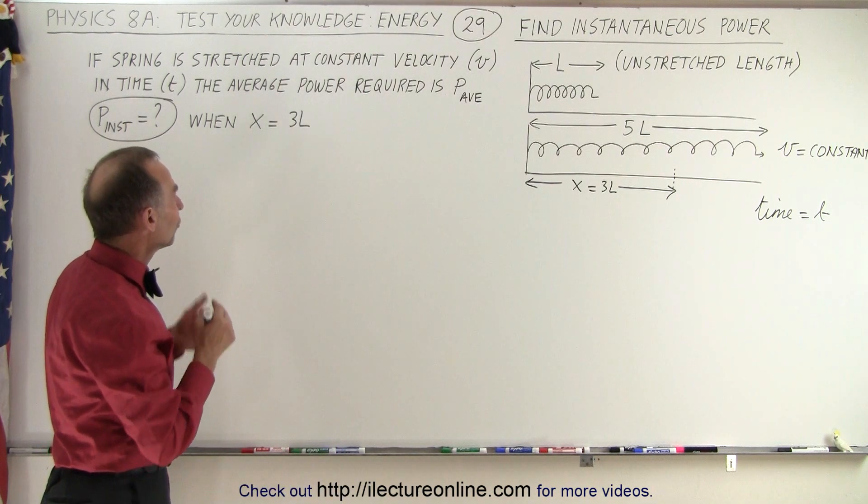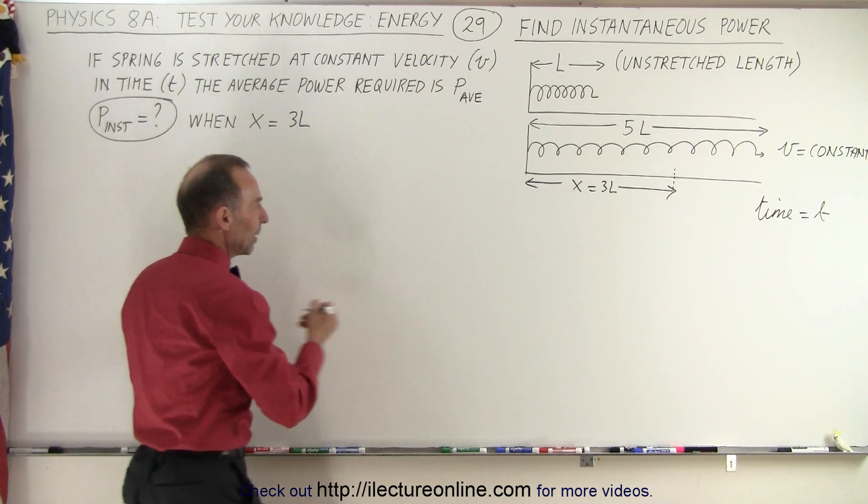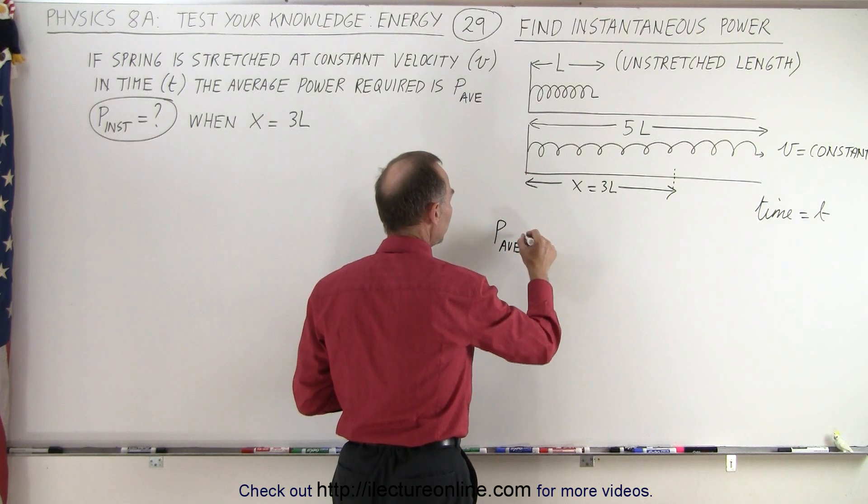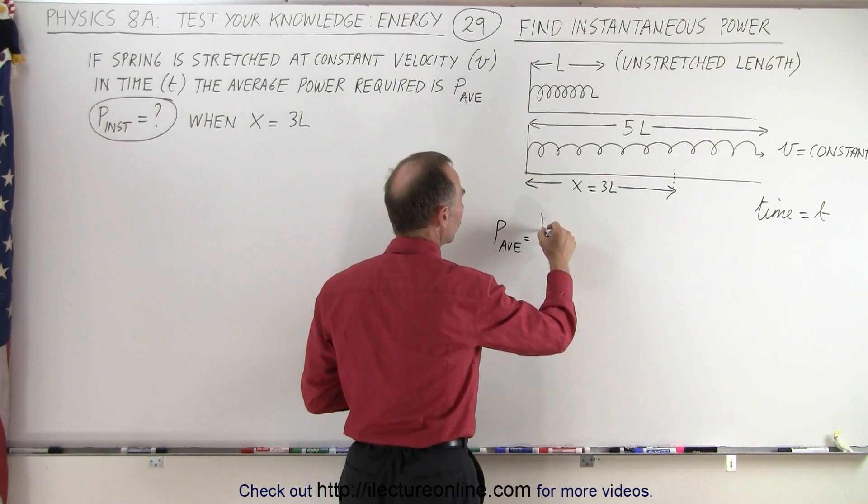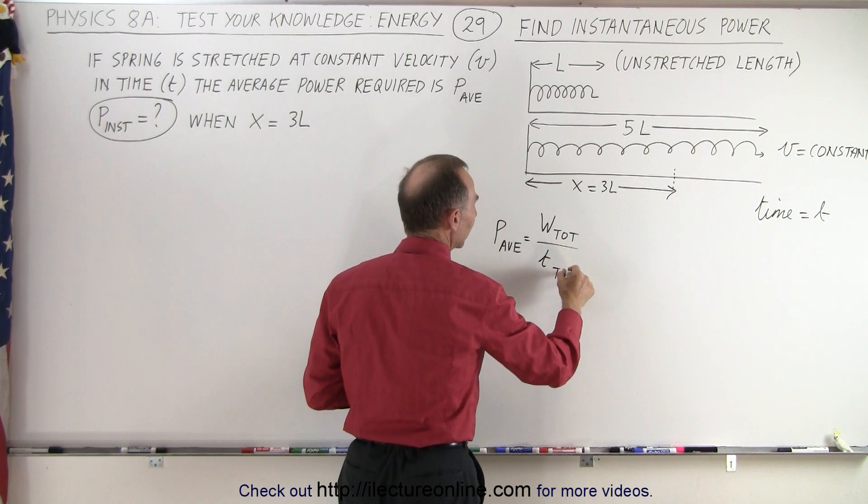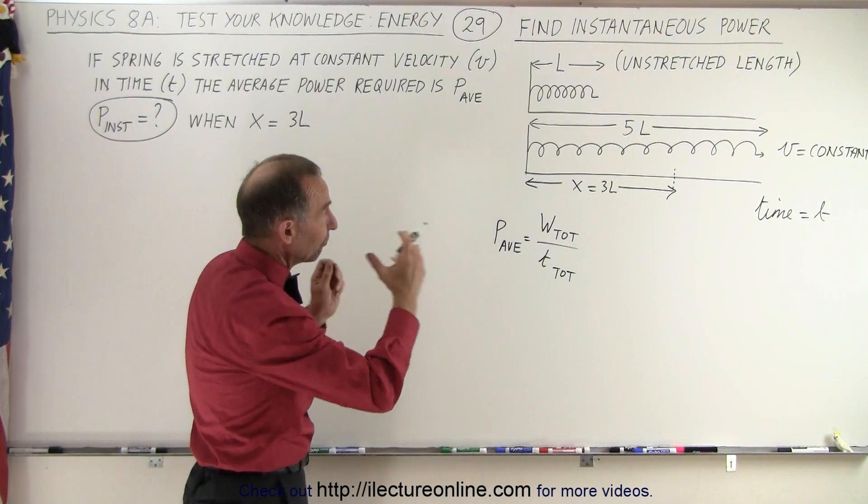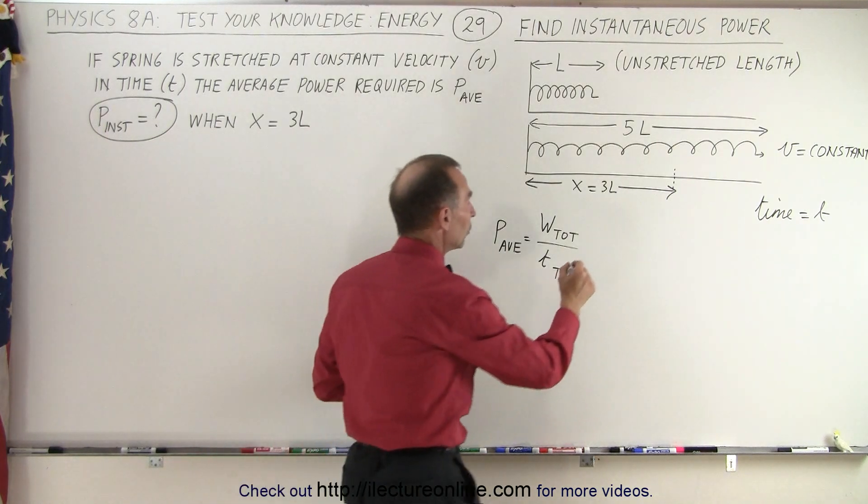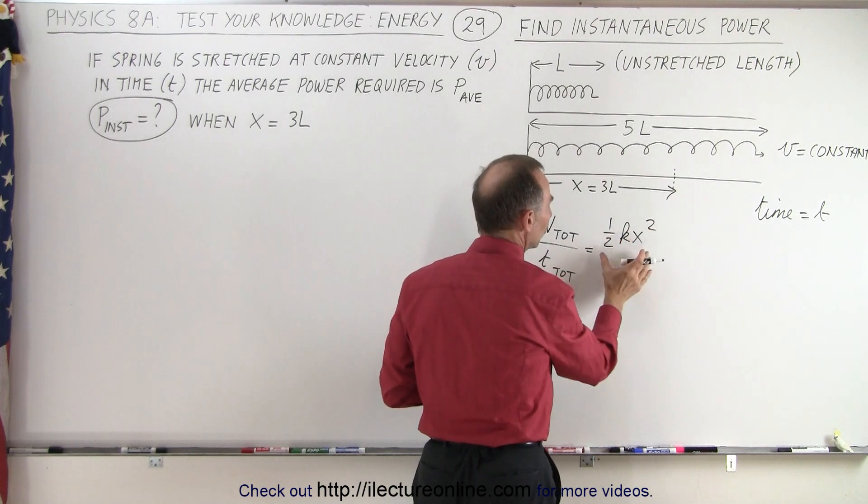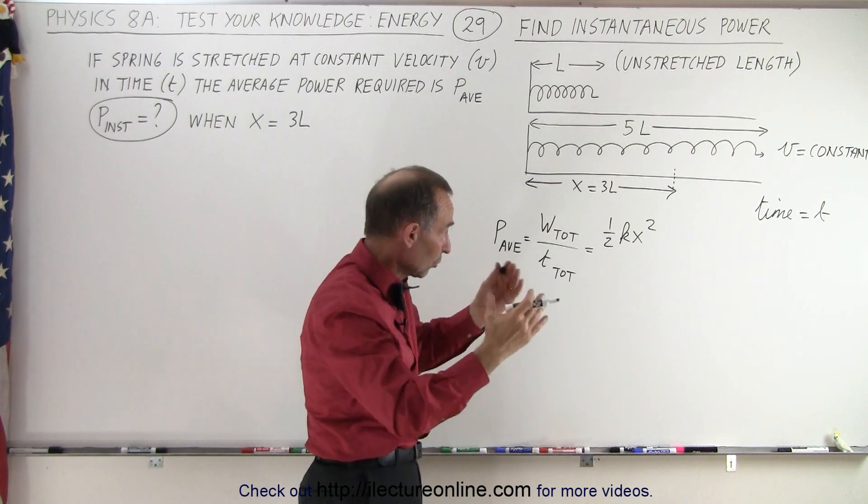So the way to tackle that is to first figure out what the average power is. So you can see by definition the average power is going to be equal to the total work done divided by the total time that it takes. And of course the total work done to stretch it from L to 5L would be equal to 1/2 KX squared, which is the amount of potential energy put into the spring, that's the work done to do that, divided by the time that it took.